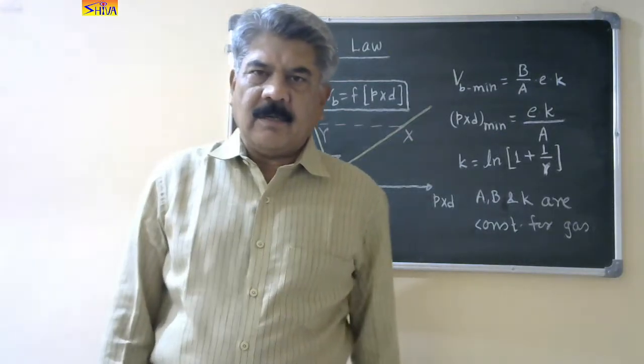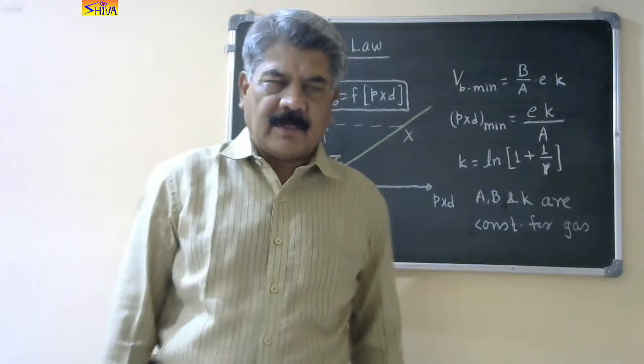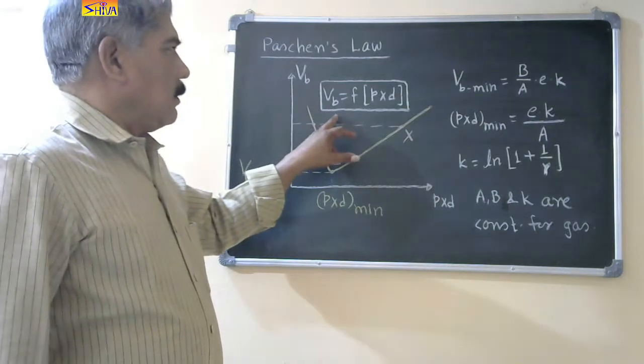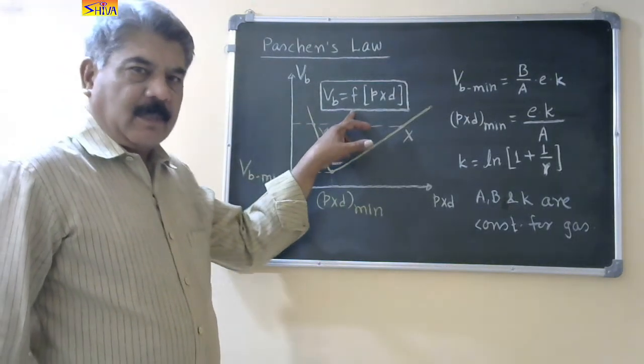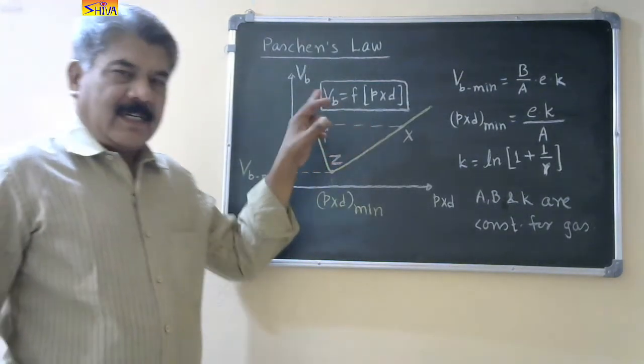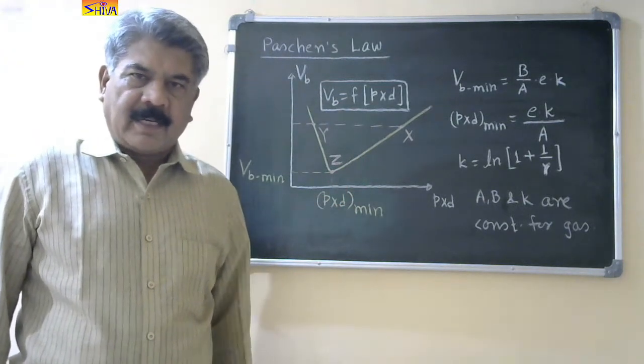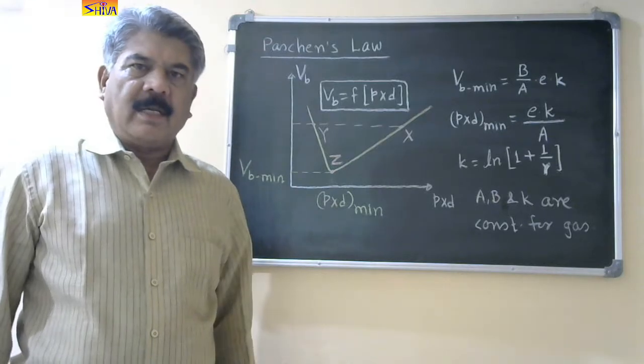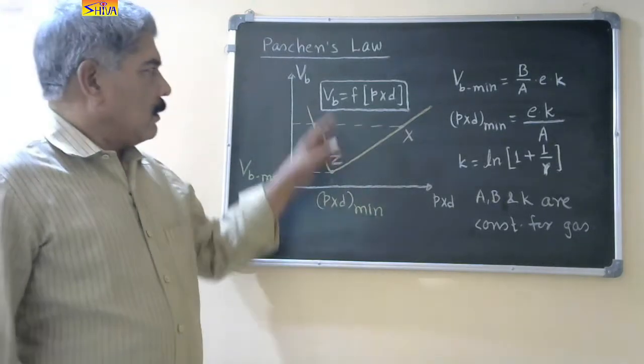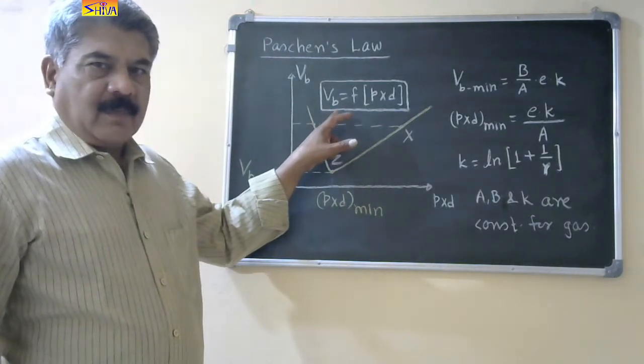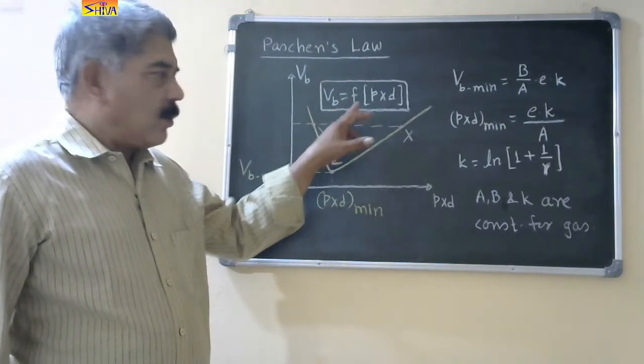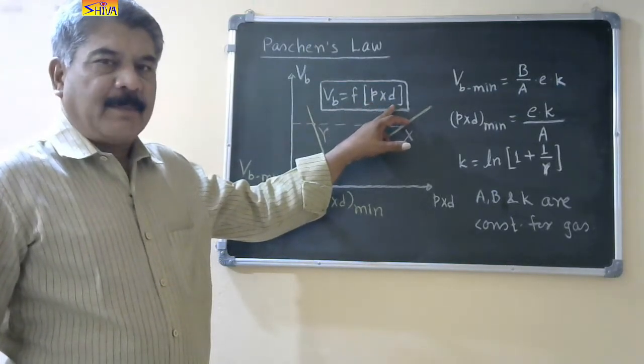So let us recall in brief Paustian's law. This is the mathematical expression of Paustian's law. It states that under uniform electric field, for a particular gas or a particular electrode material, the breakdown voltage is a unique function of product of pressure and gap spacing.